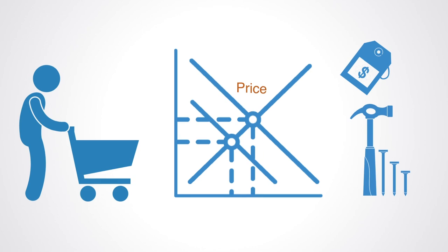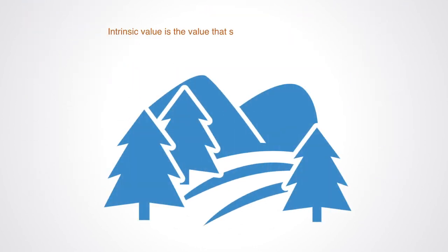In contrast to utility is intrinsic value. Intrinsic value is the value that something contributes to the maintenance and functionality of a whole system. With intrinsic value, we have a unit that values the functionality of the whole network.